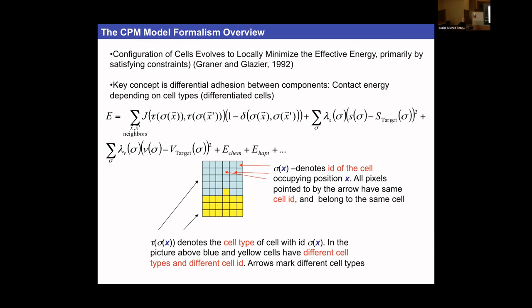The dynamics of the Potts model are partially driven by the algorithm itself — unlike vertex models or center models where you have a potential and solve dynamical equations explicitly. Here, dynamics arise as a result of the algorithm.